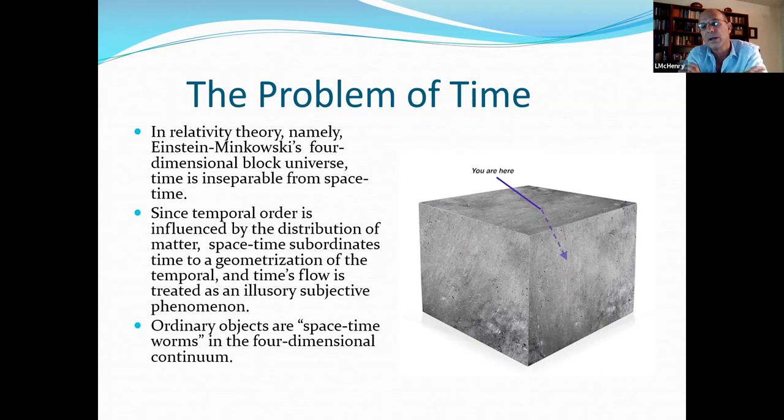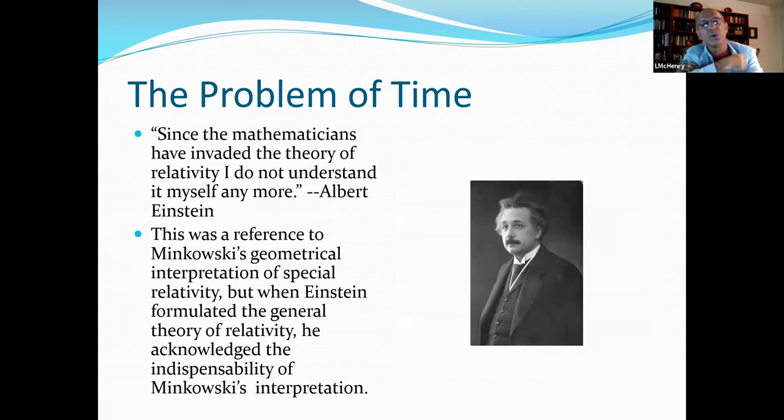And the question here is, how can these theories be modified in such a way with regard to time, at least to show us a path toward what that unification might look like? Einstein said, since the mathematicians have invaded the theory of relativity, I do not understand it myself anymore. This was a reference to Minkowski's geometrical interpretation of special relativity. But when Einstein formulated the general theory of relativity, he acknowledged the indispensability of Minkowski's interpretation.